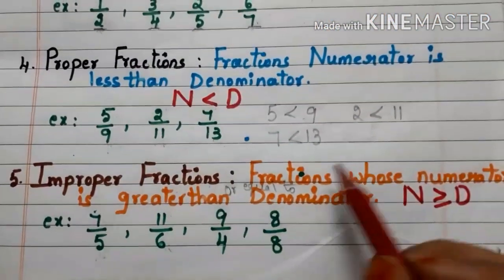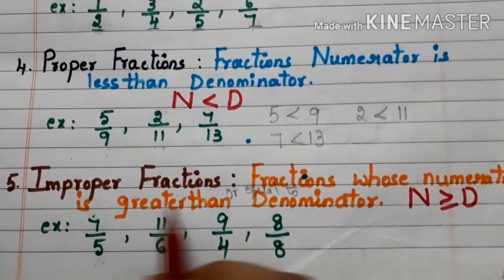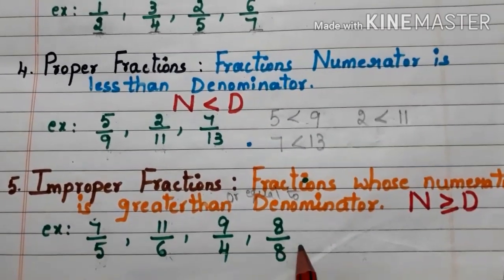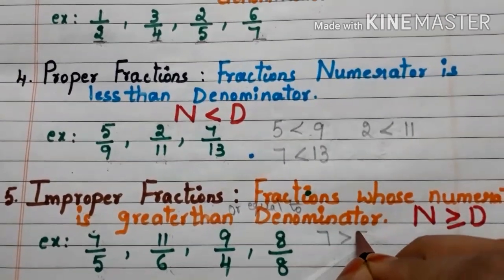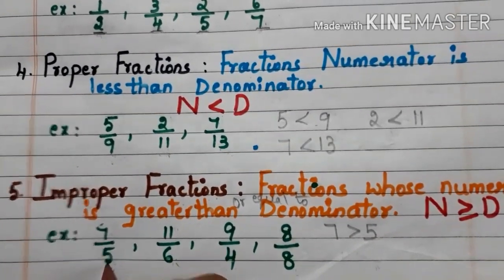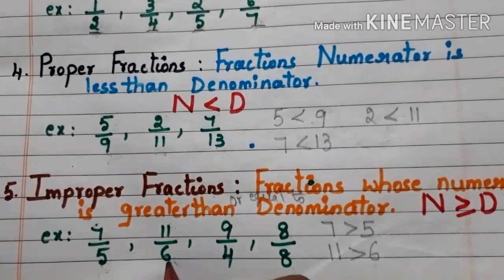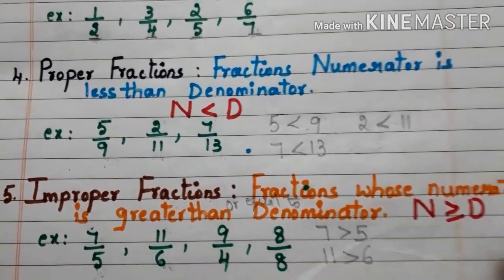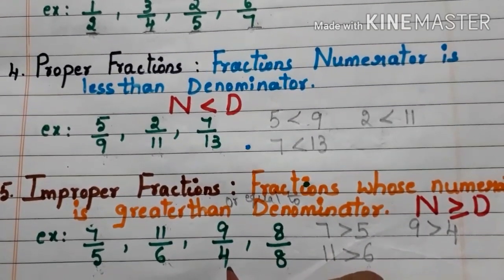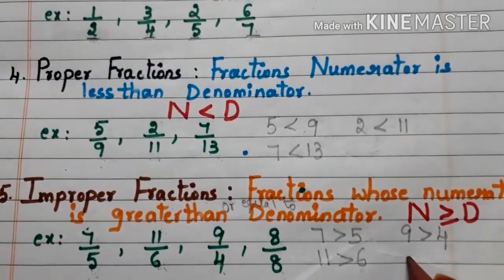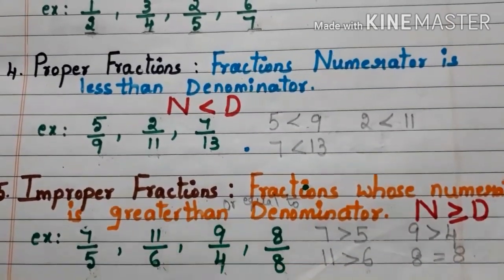Let us go to improper fractions. Fractions whose numerator is greater than or equal to the denominator are called improper fractions. Here we have some examples. In 7 by 5, the numerator 7 is greater than denominator 5, so 7 by 5 is an improper fraction. In 11 by 6, the numerator 11 is greater than denominator 6, so 11 by 6 is an improper fraction. In 9 by 4, the numerator 9 is greater than denominator 4, so 9 by 4 is an improper fraction. In 8 by 8, the numerator 8 is equal to the denominator 8, so 8 by 8 is an improper fraction.